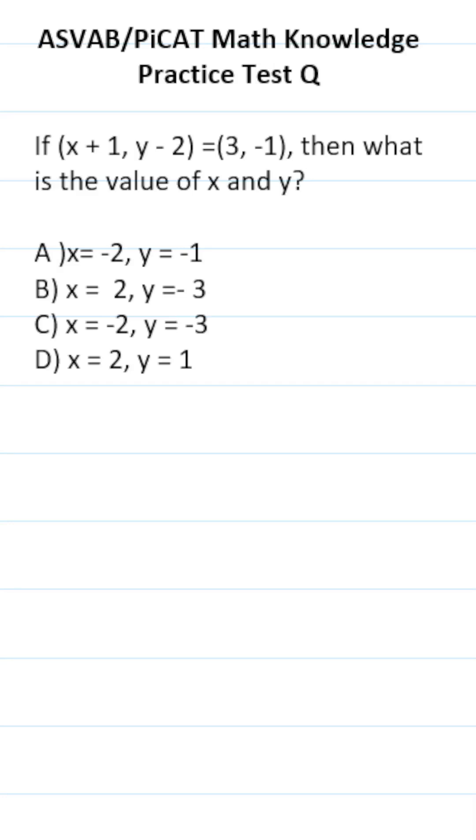This ASVAB/PICAT Math Knowledge practice test question says: if the ordered pair (x + 1, y - 2) equals (3, -1), what is the value of x and y?